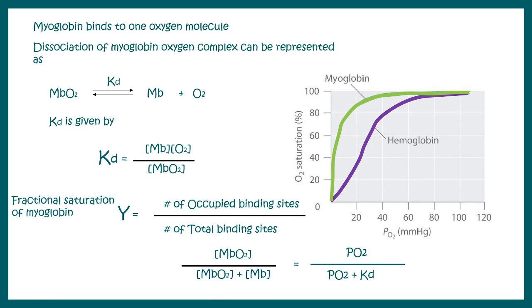In the next video we'll learn why the curve for myoglobin is hyperbolic whereas hemoglobin's is sigmoidal, and what the structural basis is for this difference. Let's summarize what we've learned: the structure of myoglobin, its structural similarities to hemoglobin, and the O₂ binding kinetics with the derived fractional saturation expression.